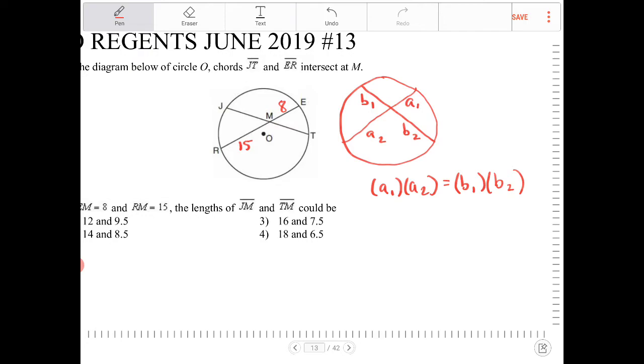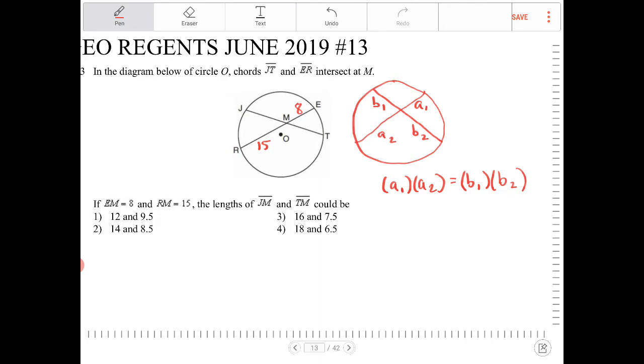So that relationship will hold true. So if I have 8 times 15, that's chord RE here, if I have 8 times 15, this will give me 120.